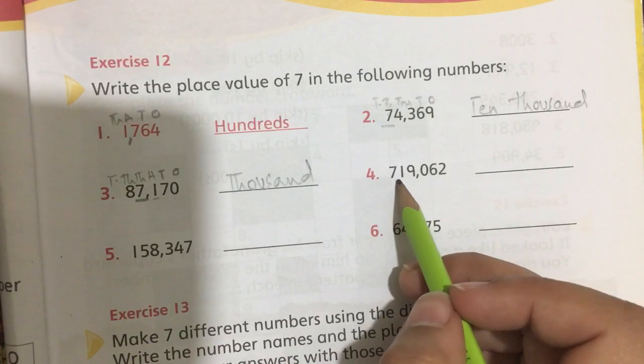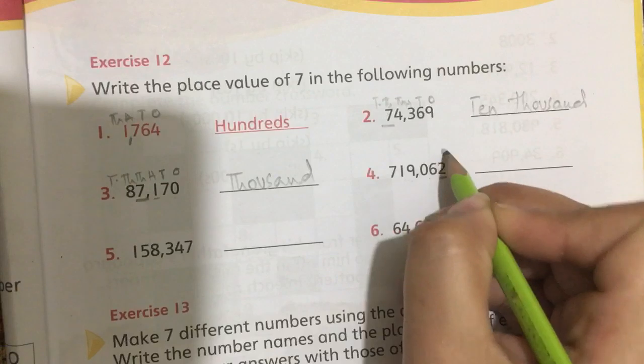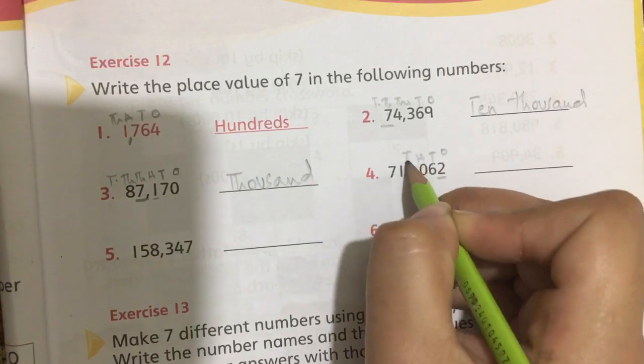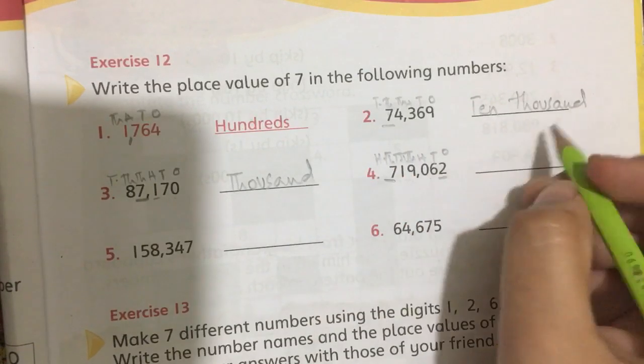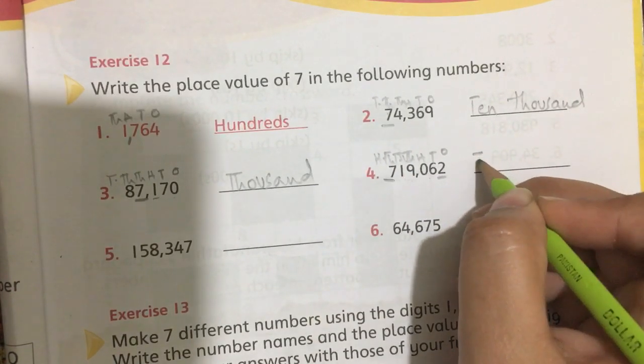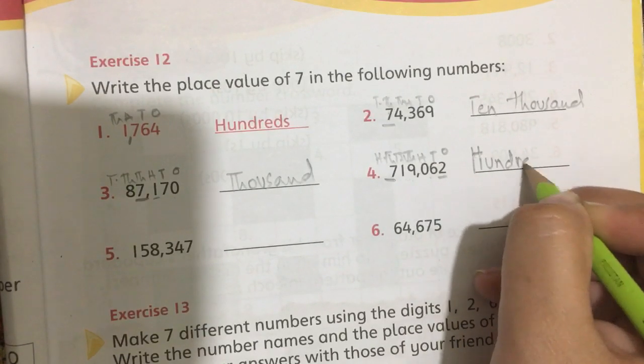The other number is 719,062. This is 1, 10, 100, 1000, 10,000, and 100,000. So 7 has a place value of 100,000.